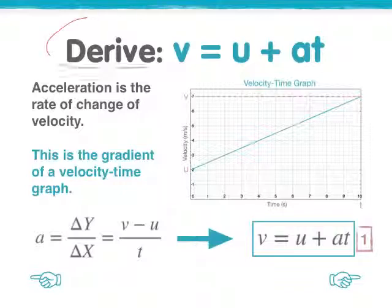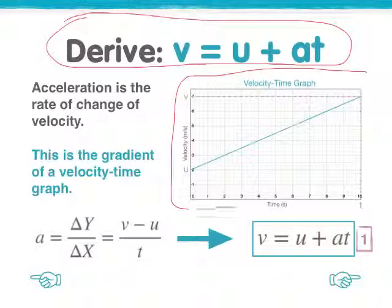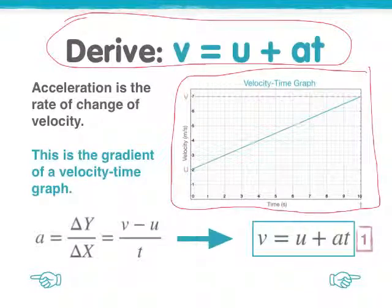So let's derive v equals u plus at. To do this we're going to visualize the motion of an object as a velocity time graph. Imagine that object starts at time equals zero at a velocity of u. That's its initial velocity. At the end of a 10 second time period or we can call it t that velocity has changed and gone to v.